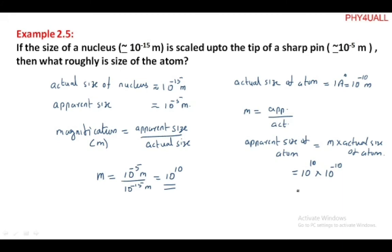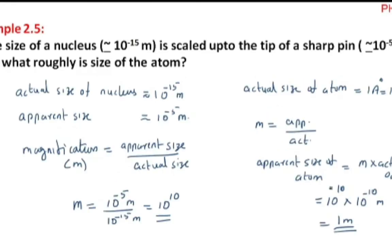So the answer is: the actual size of the atom, when scaled up, corresponds to the tip of a sharp pin placed at the center of a sphere of radius about one meter. I hope you understand this. Thank you.